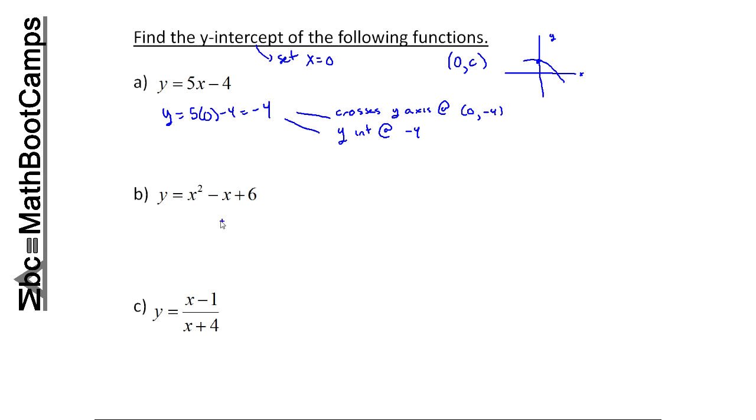A lot of times you can do this in your head. For example, take a look at b. If this is zero and this is zero, this must be six, right? In other words, if I let x equal zero, I get y equals zero squared, zero, minus zero, plus six, which simplifies out to six. So again, I could say this graph crosses the y-axis at the point zero comma six, or I could say we have a y-intercept at six.